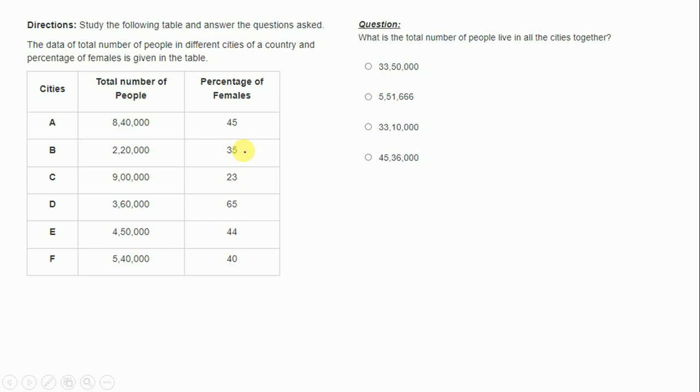This is the data given to us. Study the following table and answer the questions asked. The data shows the total number of people in different cities of a country and the percentage of females is given in the table.